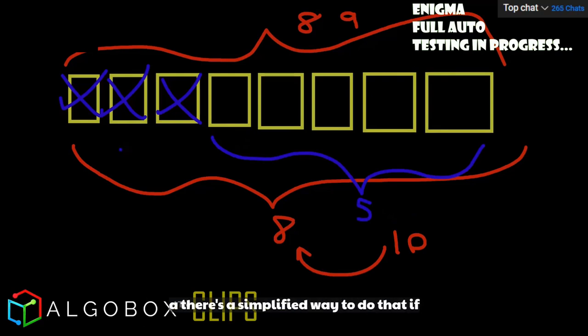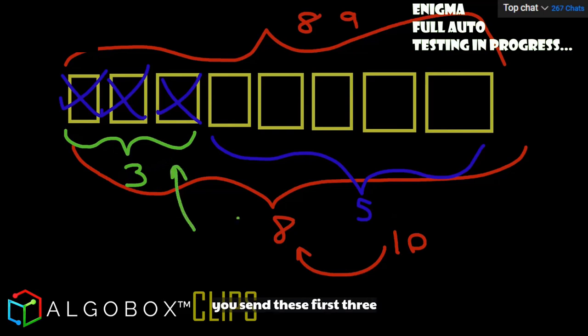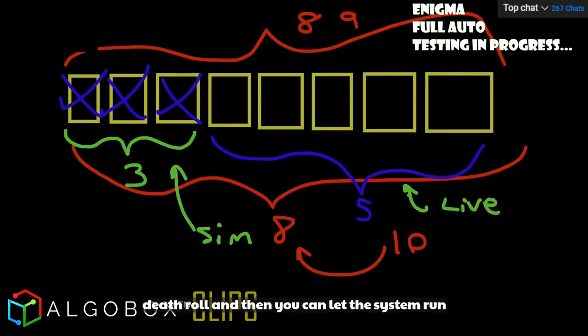If you literally just waited till a system lost three in a row, right? And like what Roger said, he said sim, right? You sim these first three, and then you start here and you go live. Make sense? So now you've avoided your death roll.